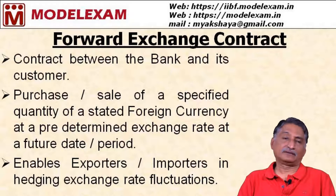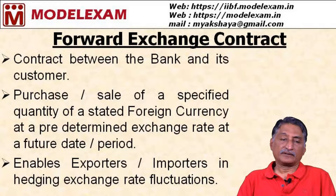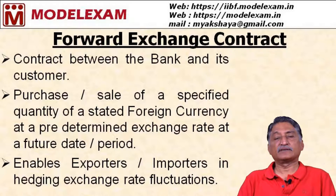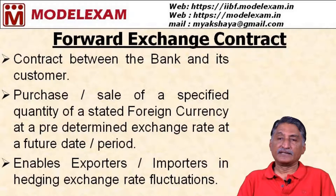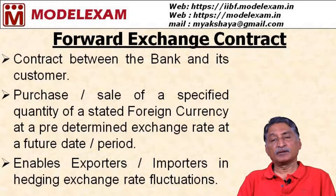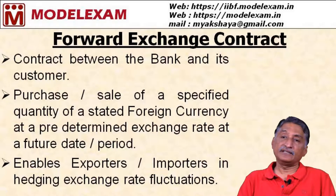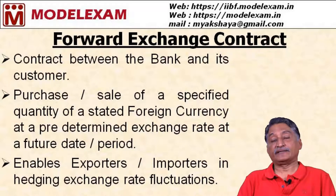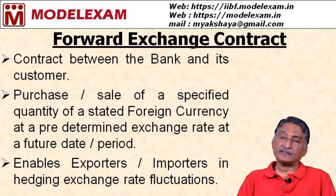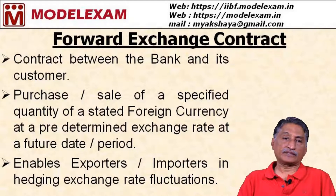How does a forward contract operate? For an importer, he is placing an order with a foreign exporter for purchase of certain machinery. The time taken is say 3 to 4 months, and the agreed price is already fixed. But at the time of actual receipt of machinery, after 3 or 4 months from the current date, there may be fluctuation in the invoice value fixed by the importer customer in India.